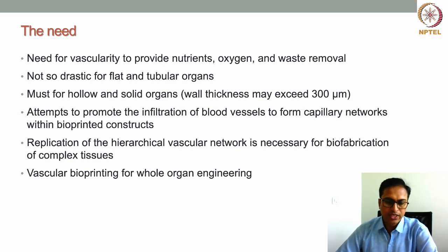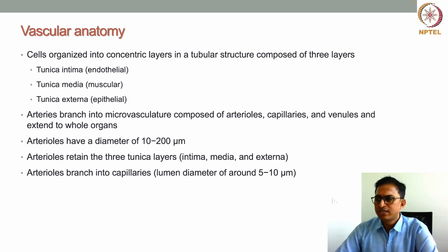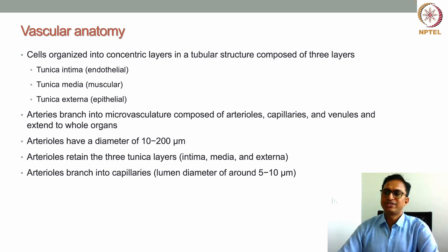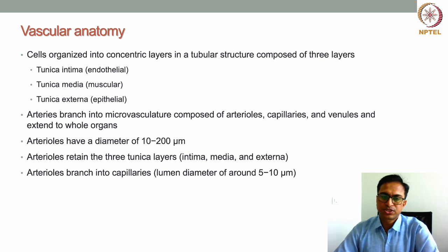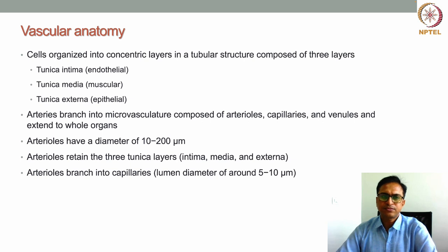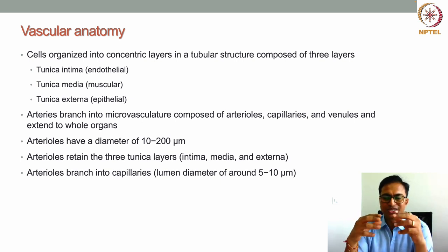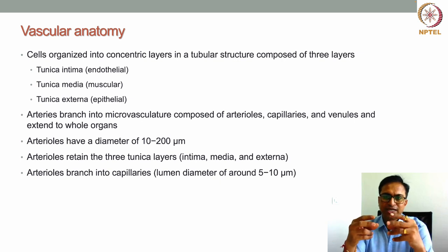Before targeting vascular bioprinting, we need to understand the vascular anatomy — the different structures present and their dimensions — because each of these structures can be targeted by one or another bioprinting modality. Blood vessels are mainly composed of three concentric layers, where different cells and extracellular matrix are organized into that kind of tissue structure.